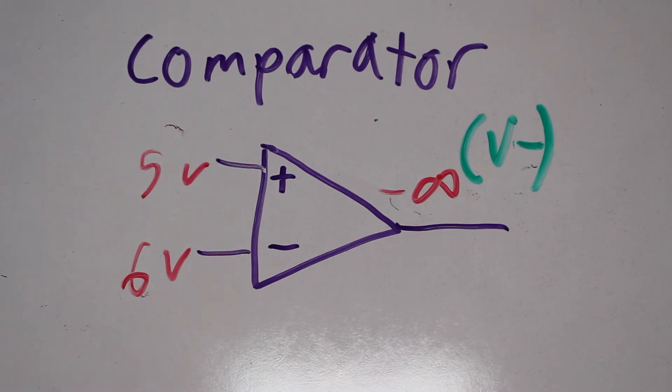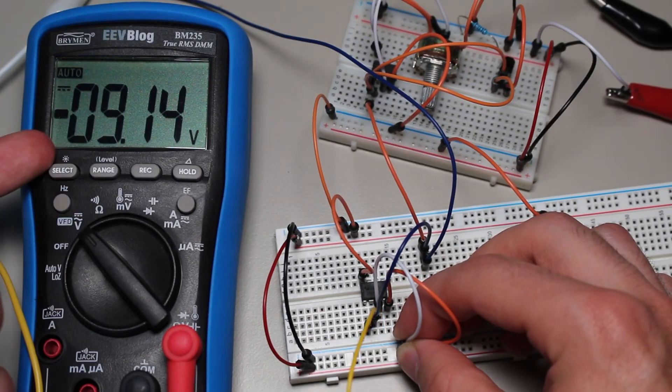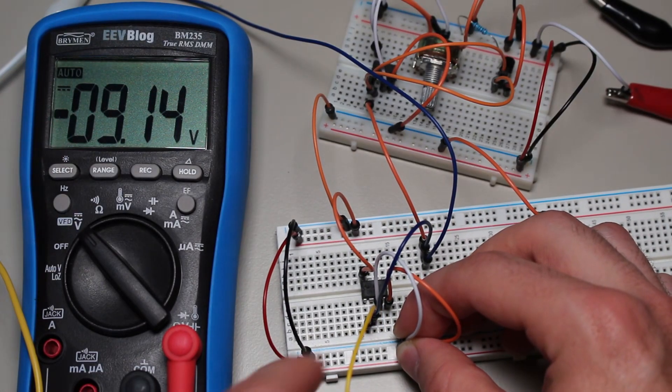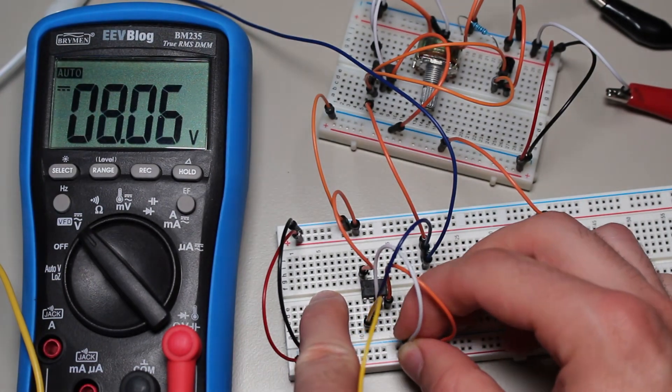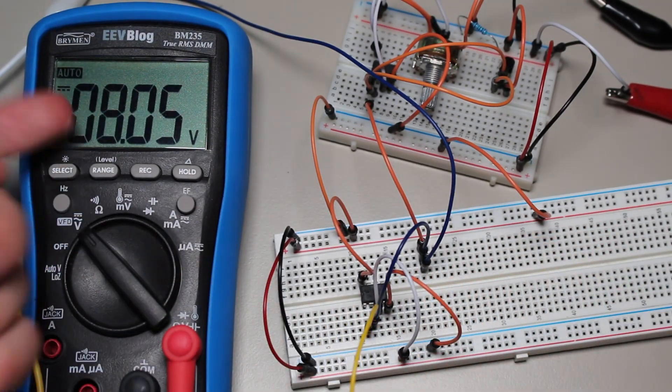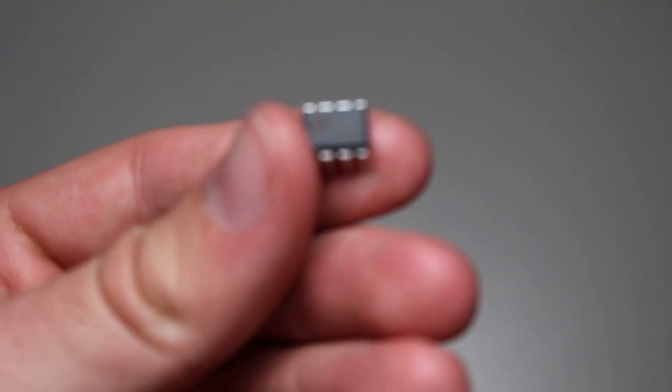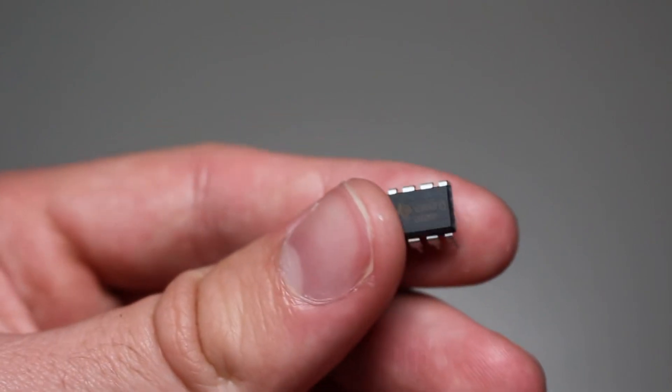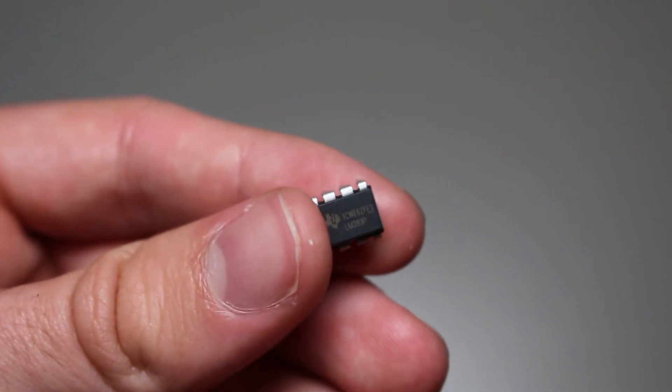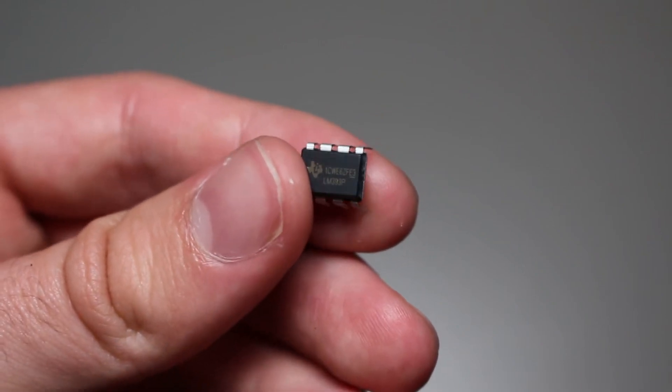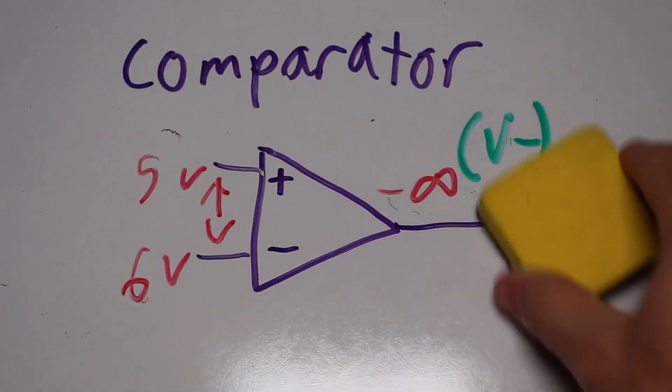The comparator is especially useful for analog to digital applications or electronic switches. However, dedicated comparators often have better performance than op-amps. The LM393 is an example of such a dedicated comparator. However, it may be worth considering using an op-amp as a comparator if the performance is good enough for your circuit and you have an extra op-amp sitting around unused on an IC.